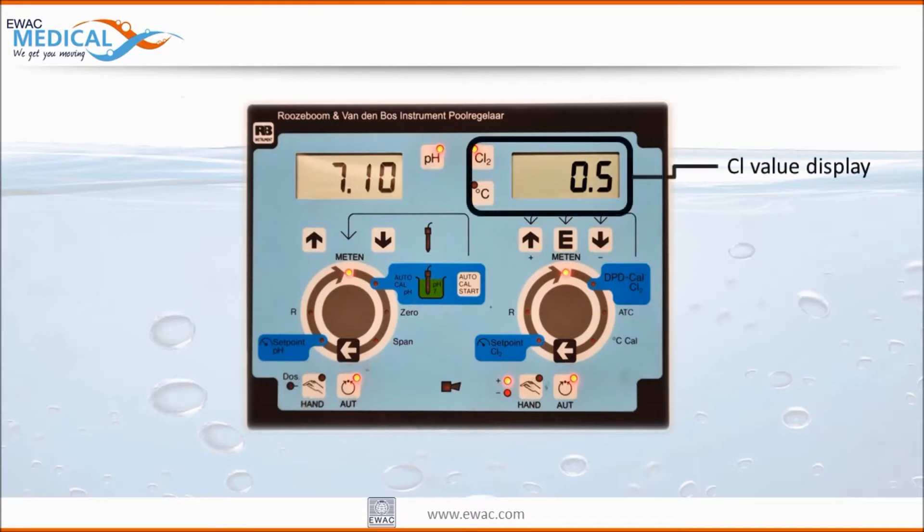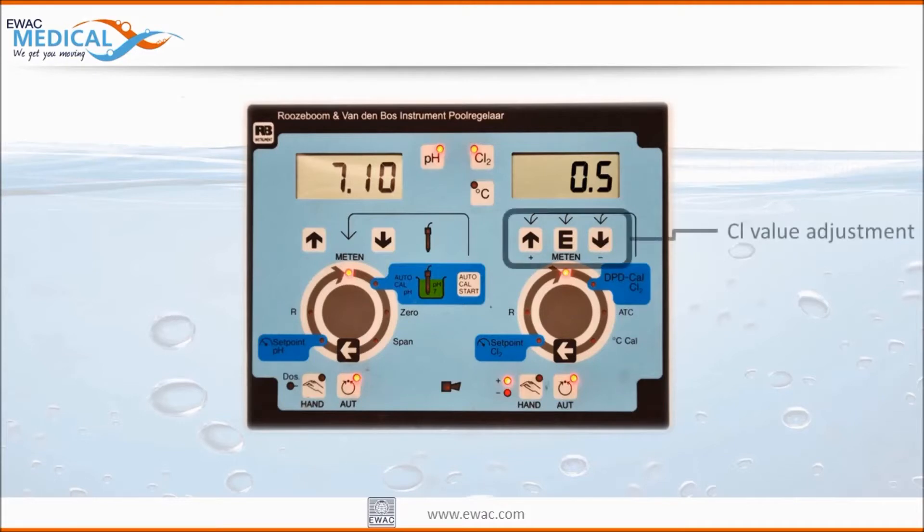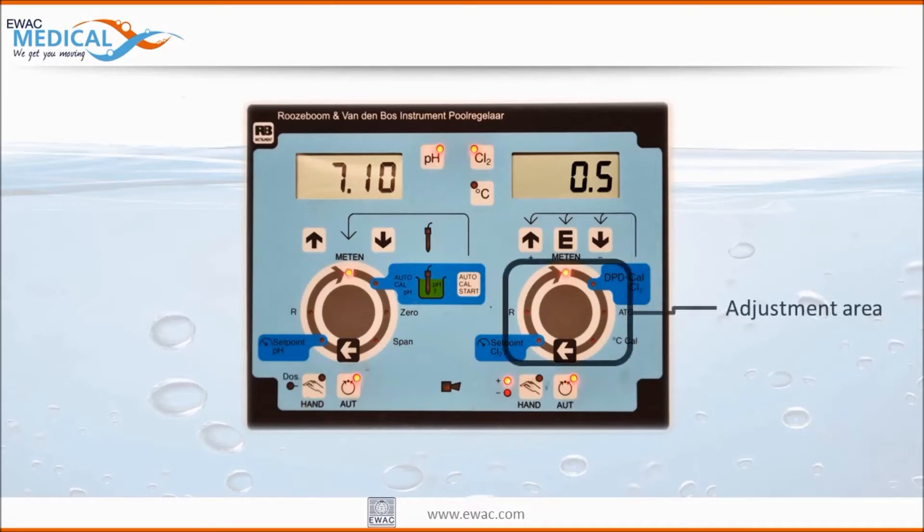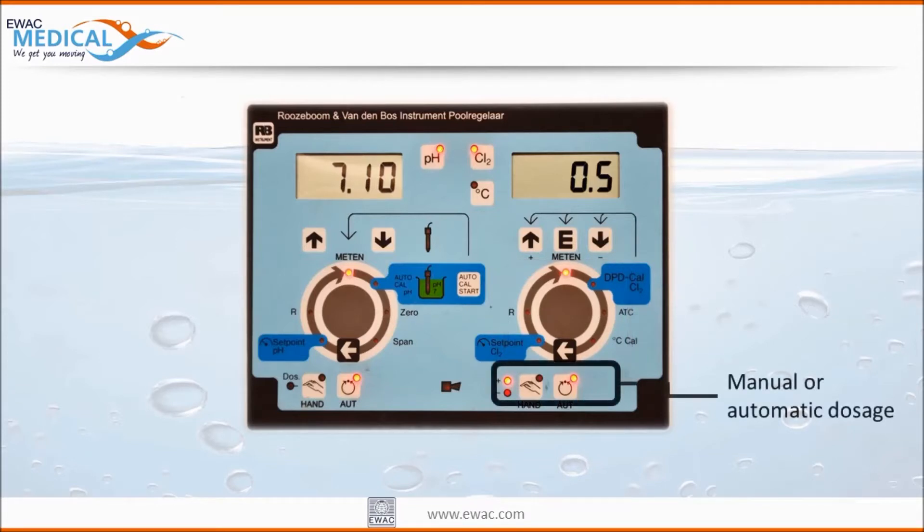On the upper right side the measured chlorine value is displayed. With the keys below it the settings and calibration can be changed. And again below it we find the adjustment area for setting the desired value and calibration. And again with the buttons below it we can switch between automatic and manual dosing of chlorine. This alarm LED will light when there's too much deviation.